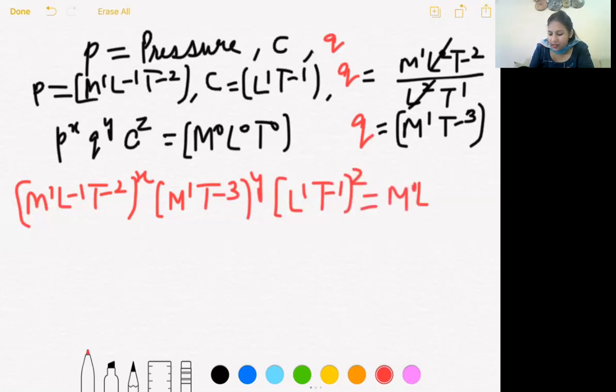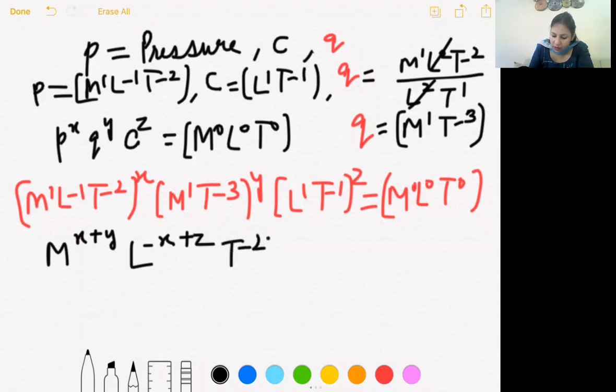That is M0 L0 T0. So collect and make three equations like we do in proof the formula method. This is M raised to power X plus Y, L raised to power minus X plus Z, T raised to power minus 2X minus 3Y minus Z is equal to M0 L0 T0.